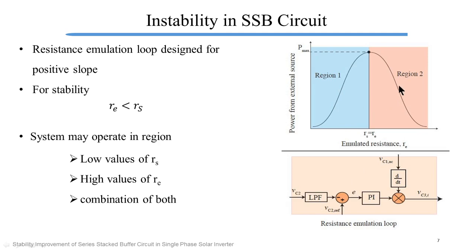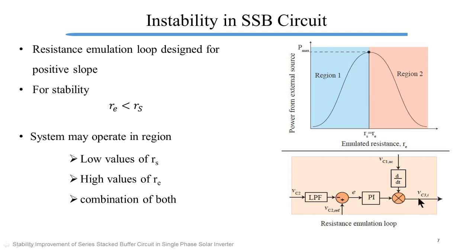However, let us see what happens in region 2. In region 2, with a small positive error E, the output of the PI controller increases, hence the value of emulated resistance increases. However, as emulated resistance increases, the absorbed power reduces. As absorbed power reduces, the average value of VC2 reduces, hence the error again increases, hence the emulated resistance again increases. This means the resistance simulation loop is behaving like a positive feedback loop, and the value of emulated resistance is going on continuously increasing.